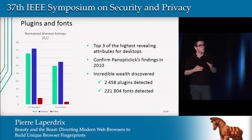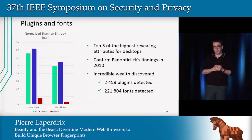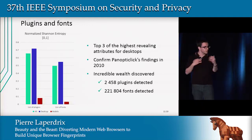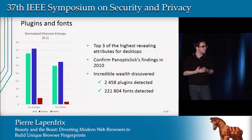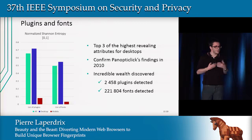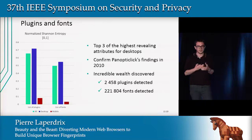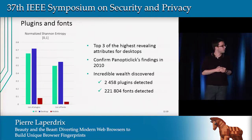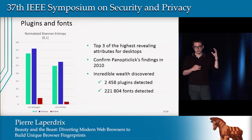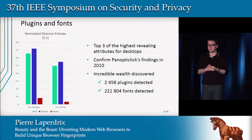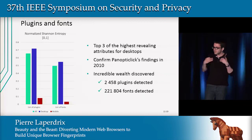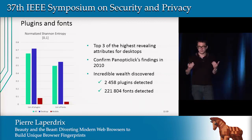Looking at plugins and fonts, there is a pretty big gap between desktop and mobile fingerprints. On mobile you don't have any plugins, because HTML today is complete enough that you don't need plugins, and since we use the Flash plugin to collect the list of fonts, we don't have access to that on mobile — so the entropy for mobile is close to zero. For desktop fingerprints, plugins and fonts are the top three highest-revealing attributes. We detected more than 2,400 different plugins and more than 220,000 different fonts, a diversity we would never have guessed.